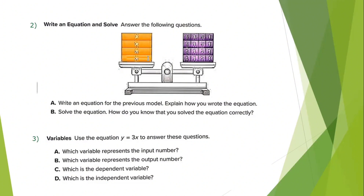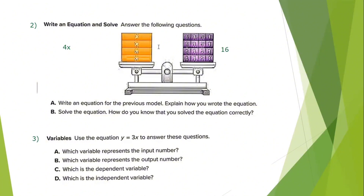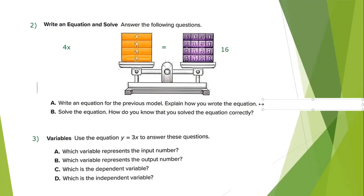You have here 1, 2, 3, 4 boxes. The value of each box is x. So the value of these boxes is x plus x plus x plus x, or x times 4, which I write as 4x. On the other side, I have 16 boxes, each with value 1, so that equals 16. The two sides are balanced, so I put an equals sign. The equation is 4x equals 16.